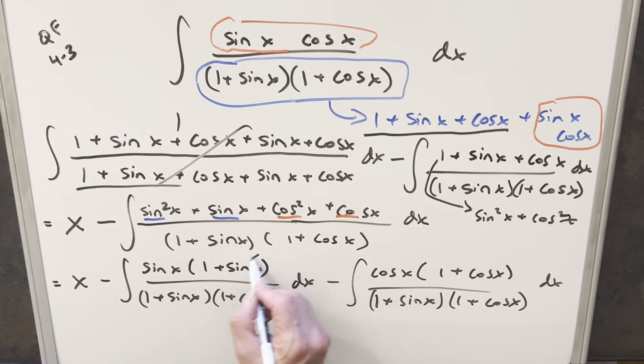But then I can cancel 1 plus sine x here and here. And cancel 1 plus cosine x here and here. But now with what we have left here, each of these two integrals is going to be pretty easy. I'm just going to make a little more space, and we can finish this off.